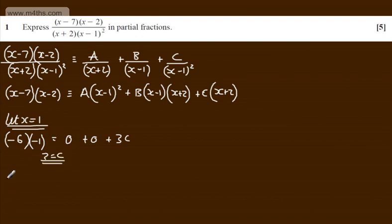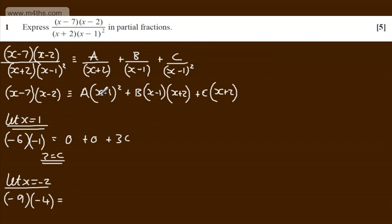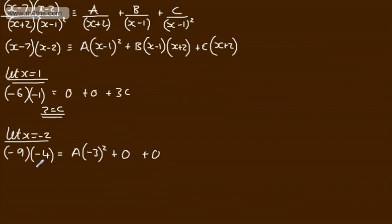Now let x equal minus 2. On the left-hand side we get minus 9 times minus 4. On the right-hand side, we have A times minus 3 all squared, plus 0 plus 0. So 36 equals 9a, giving a equals 4.